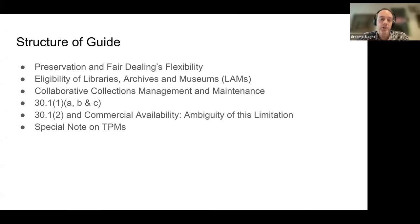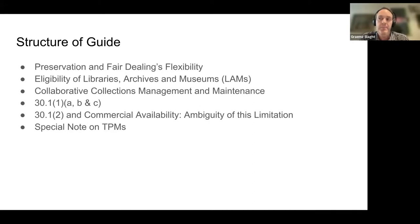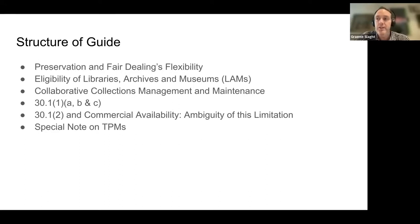Some clauses in 30.1 are extremely helpful for software collections; others are somewhat ambiguous. The guide aims to iron out those ambiguities and explain where fair dealing might come in as a partner to 30.1. The first part of the guide starts with a substantial examination of fair dealing, its flexibility, and how it applies to software preservation — and in how many cases it might be helpful to think of 30.1 and fair dealing together in your rights toolkit.